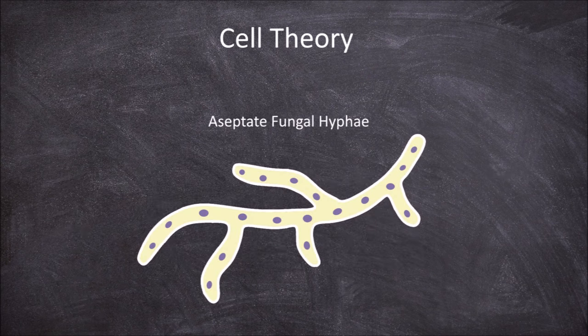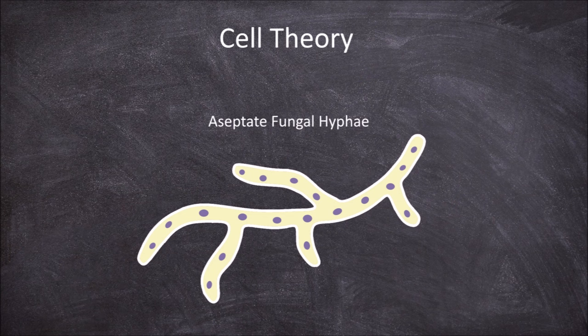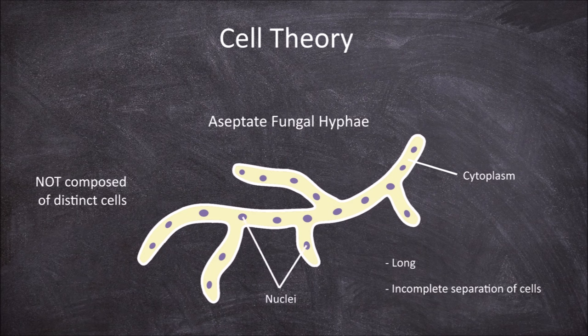Aseptate fungal hyphae are another example of an atypical cell. Fungal hyphae are very large filamentous structures. Cells are generally considered to be small, have a single nucleus, and be separated into distinct units. Aseptate fungal hyphae challenge the idea that the cell is composed of discrete cells. This is because they are long and have incomplete separation, creating a continuous cytoplasm with multiple nuclei along the hyphae.